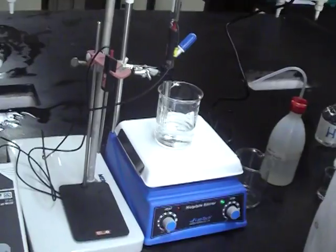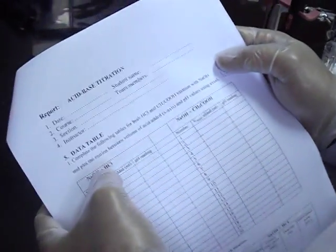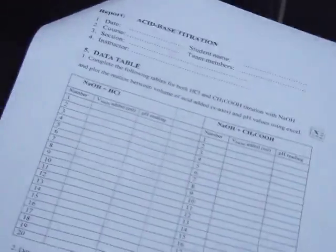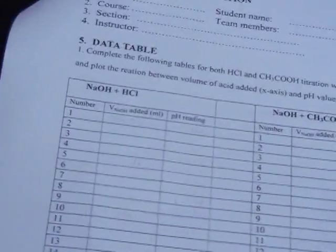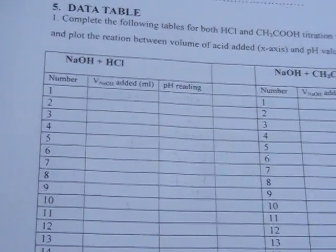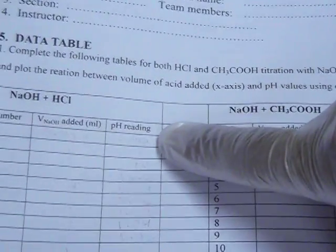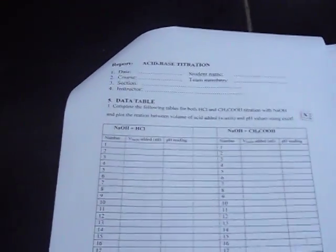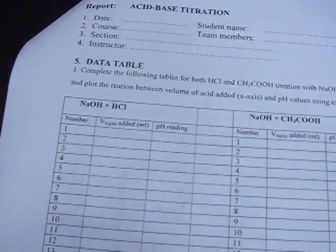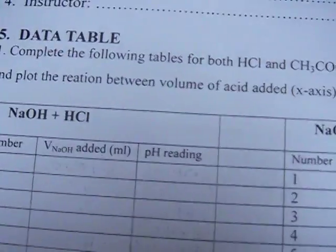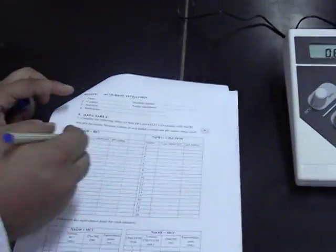And using your sheet that has the table for the sodium hydroxide and HCl titration, you start to record. Your partner will start to record the volume of sodium hydroxide added and the pH reading. For the first one we write zero volume of sodium hydroxide added, and we will record the pH value.